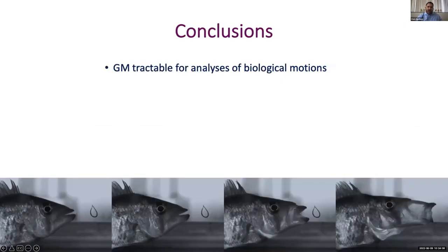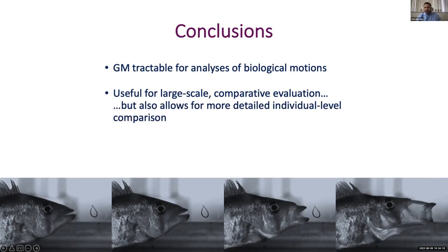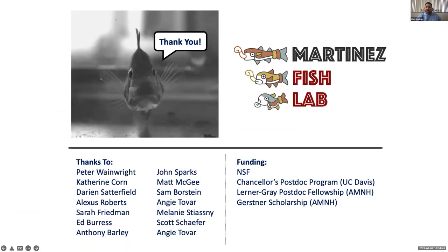We attribute this greater diversity to variation in jaw-substrate interactions that are absent during suction feeding. This is a really powerful approach for detecting and statistically comparing mean and variance of kinematic patterns. To wrap things up, I hope I've convinced you that this approach is tractable for studying motion diversity, applicable at both macroevolutionary scales and comparisons at smaller scales. There's a lot of potential to apply these methods to other organisms, different types of motions, and other systems, including comparing simulated movements of biomechanical models in a form-function landscape.